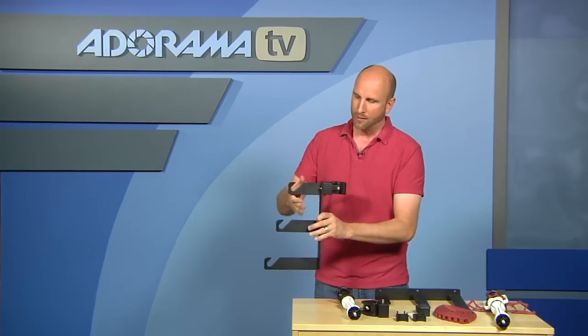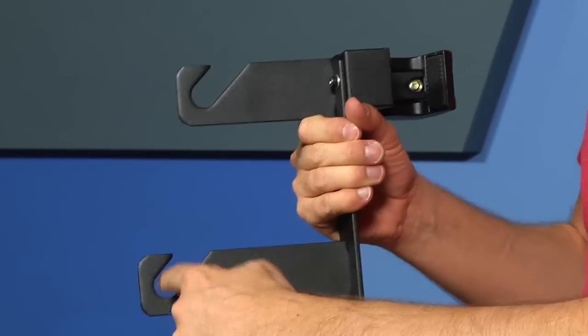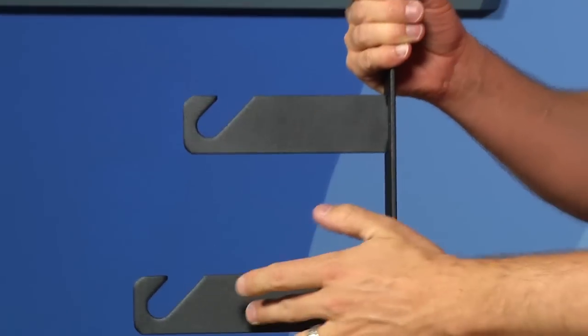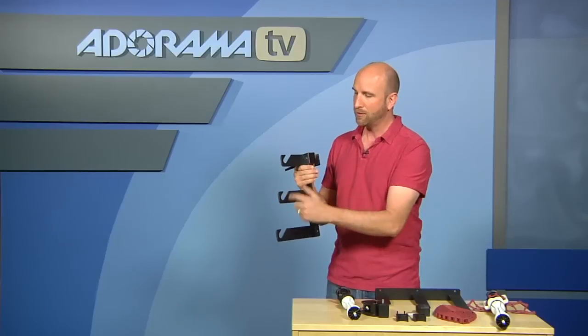So the system we're showing you now is actually the three X-PAN set, and it's got three actual places to hang paper. You can get this in different variations, up to nine different hooks on here.